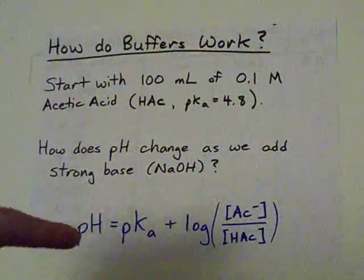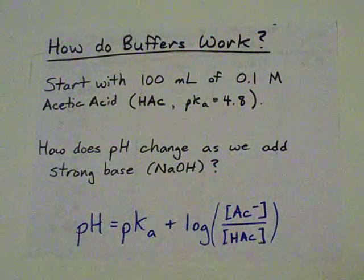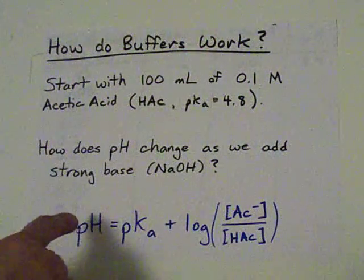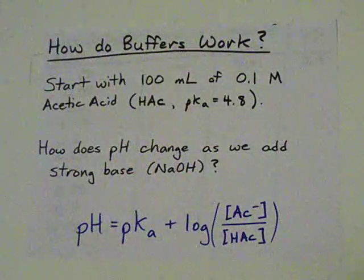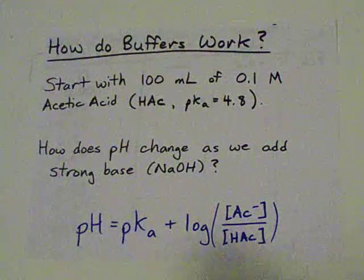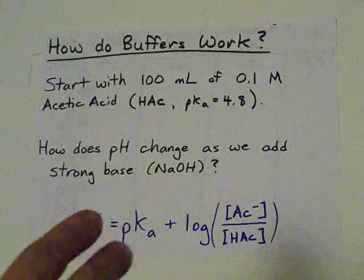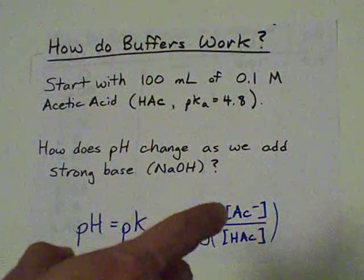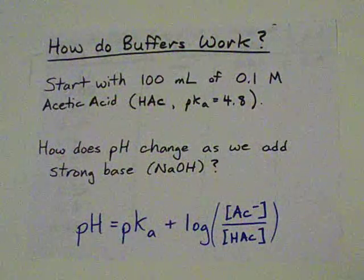I'm going to show you how they work math-wise with the Henderson-Hasselbalch equation. You can calculate the pH of a buffer if you know the pKa of the acid that made the buffer and you know the ratio, pre-equilibrium, of the acid and its conjugate base in the solution. Check it.